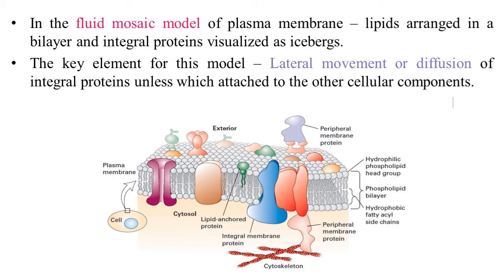The cytoskeleton is very important for the maintenance of structural stability of a cell. The blue color integral protein does not have any such attachment. The model is called the fluid mosaic model because when observed under the microscope, the lipid bilayer looks like an ocean or sea, and the integral proteins look like icebergs.